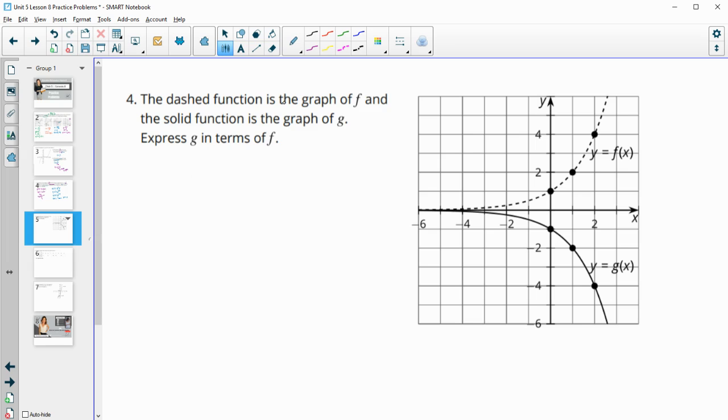Number four, the dashed function is the graph of f and the solid line is the graph of g. Express g in terms of f, and it is g of x since our horizontal axis has an x on it. So g of x is equal to, and it looks like the reflection. So it's just the reflection over the x-axis.